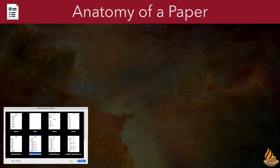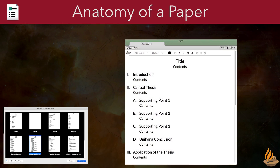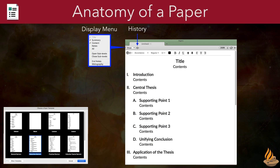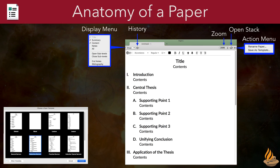Clicking New Paper brings up the Template Chooser, which offers a wide variety of formats. Once we've chosen a template, it opens in its own tab. Paper features a number of new menus and buttons in the tab. From left to right, they are: the Display menu, which allows us to choose which paper elements to display; the History menu, which allows us to revert to a previous action; Zoom, which changes the size of the items on the paper without actually changing the size of the font; Open Stack, which opens the current stack; and the familiar action menu, which allows us to rename the paper or save it as a new template.